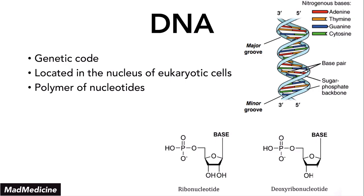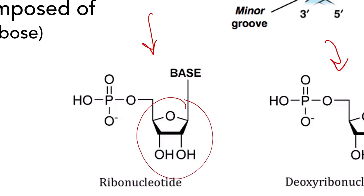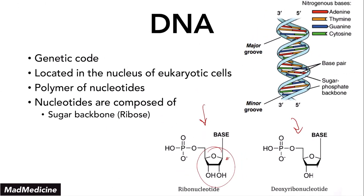DNA itself is a polymer of nucleotides. Nucleotides are built up of three main components. Number one, you have the sugar backbone — a ribose-based sugar. This is the backbone of DNA, and without it, our DNA wouldn't have the structure it has. The helical shape is because the helix backbone is made up of ribose connections. That's why the sugar backbone is very important.